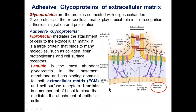Glycoproteins of the extracellular matrix play a crucial role in cell recognition, adhesion, migration, and proliferation. Adhesion glycoproteins are represented by fibronectin and laminin.